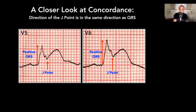For example, in V5, the QRS goes upward — it's positive — and the J point is elevated also. Here again in V6, the QRS is positive and the J point goes in the same direction. That is called concordance: positive concordance.